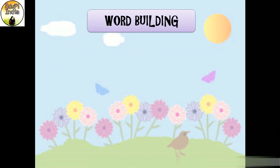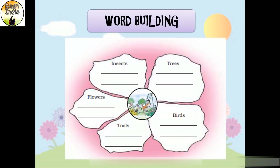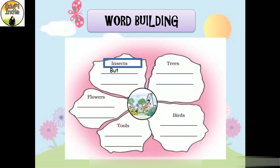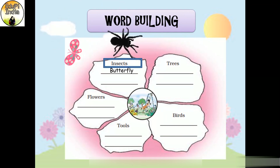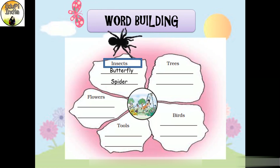Now it's word building time. Look at this big flower — it has five petals, each asking you to write two names. Let's start with insects. Can you name any two insects? First is butterfly — B-U-T-T-E-R-F-L-Y, butterfly. Next is spider — S-P-I-D-E-R, spider. You can also write other insects like mosquito, grasshopper, ants, bees, beetle, bug, or caterpillar.